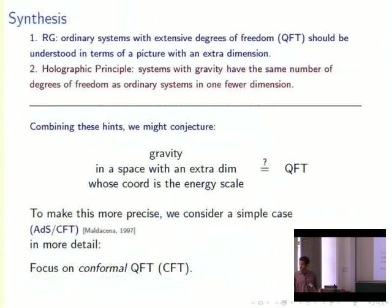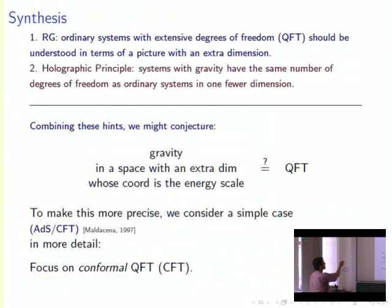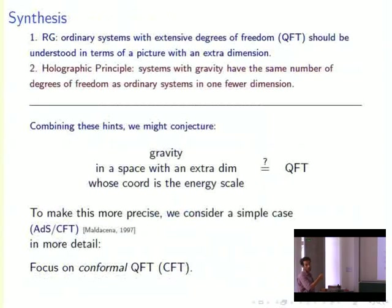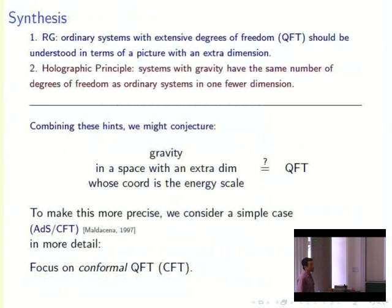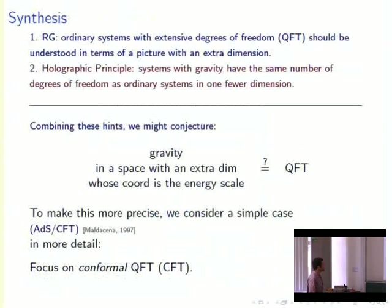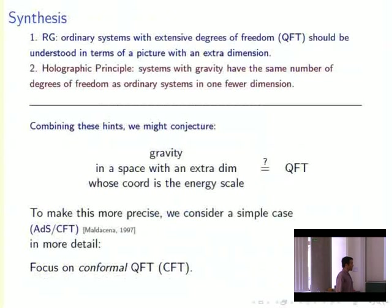Let's combine these two ingredients. The first ingredient: the renormalization group says ordinary systems with extensive degrees of freedom should be understood in terms of a picture involving an extra dimension, where the extra dimension labels copies of the system at different coarse-graining scales. The second ingredient: the holographic principle says systems with gravity have the same number of degrees of freedom as an ordinary system with one fewer dimension. This suggests that gravity in a space with an extra dimension whose coordinate is the energy scale might be the same as an ordinary quantum field theory.